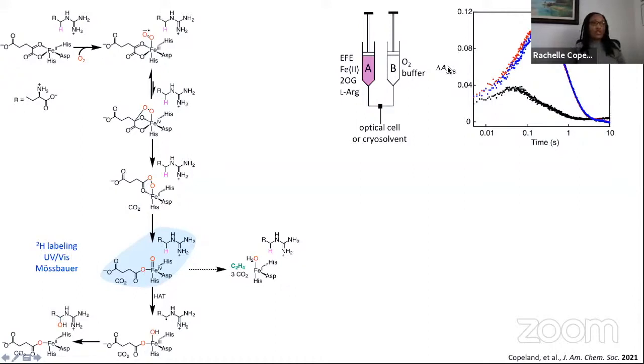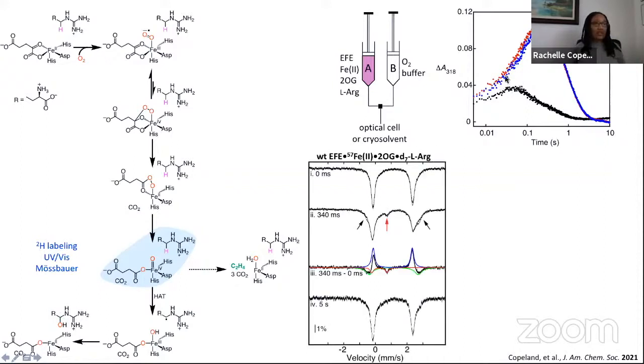As shown here in this UV trace, with L-arginine which is unlabeled, we accumulate a small amount of ferryl. However, when we have deuterium on the arginine substrate, we accumulate more ferryl. That's because we have a kinetic isotope effect on ferryl decay via hydrogen atom extraction. We can verify that the signal that we're seeing in the UV spectrum is in fact due to an iron-4-oxo by looking at the Mössbauer spectrum.